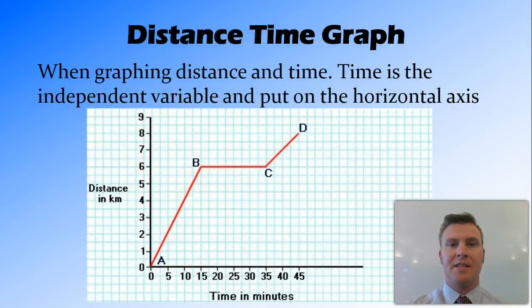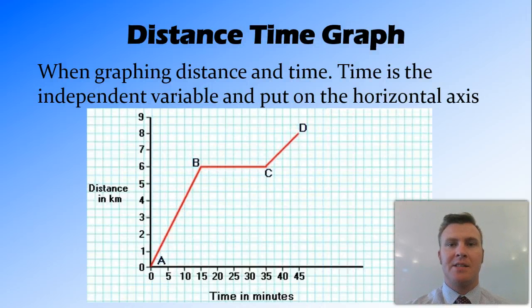So firstly the distance time graph is exactly that. We graph distance as opposed to time. And in this case time is the independent variable so it goes on the horizontal axis while distance, the dependent variable, goes on the vertical axis.